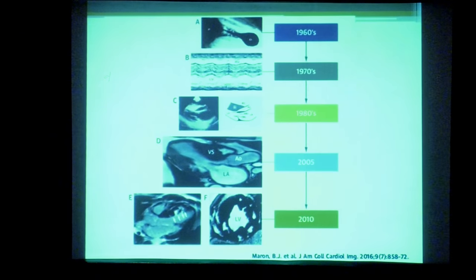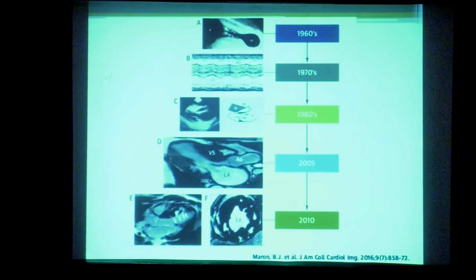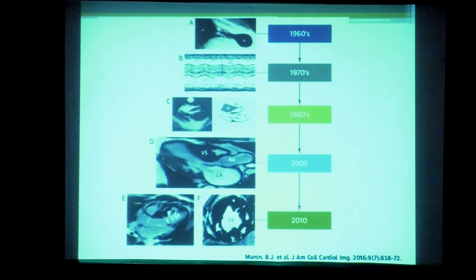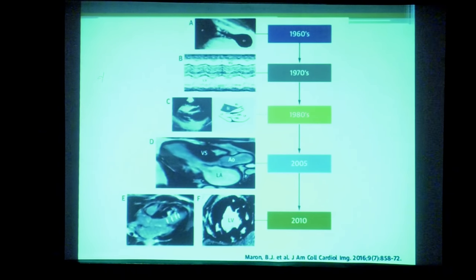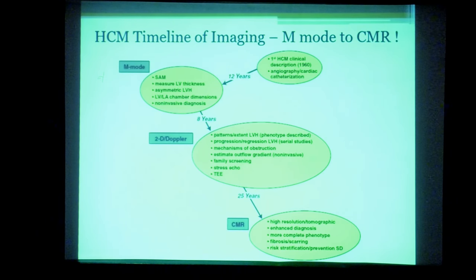Looking at the evolution of imaging modalities for hypertrophic cardiomyopathy: it started in the 1960s with cardiac catheterization and LV angiography. By the late 1960s and 1970s, M-mode echocardiography became available, with description of parameters like asymmetric hypertrophy and systolic anterior motion of the mitral valve. By the 1980s, we had 2D echocardiography, and MRI came about two decades back and has immensely contributed to the imaging of HCM.